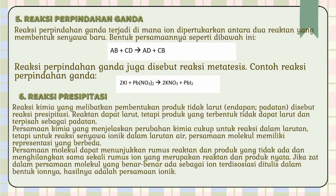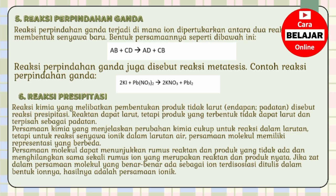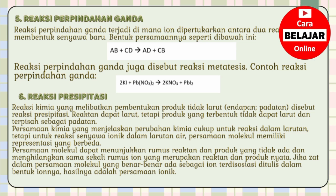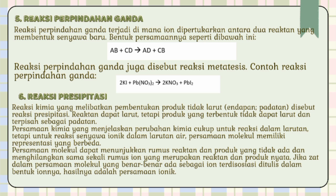5. Reaksi Perpindahan Ganda. Reaksi perpindahan ganda terjadi di mana ion dipertukarkan antara dua reaktan yang membentuk senyawa baru. Reaksi perpindahan ganda juga disebut reaksi metatetis. Contoh reaksi perpindahan ganda ditunjukkan pada persamaan di bawah ini.